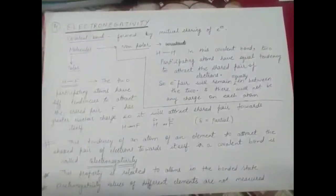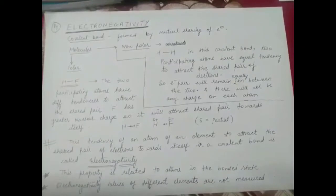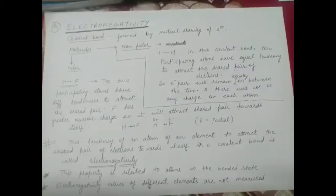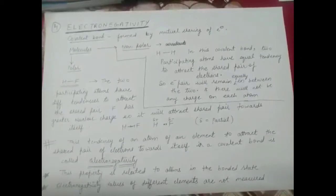Now let's discuss the next periodic property: electronegativity. So far we have learned atomic size, ionization enthalpy, and electron gain enthalpy. Today we'll discuss the next periodic property, electronegativity.